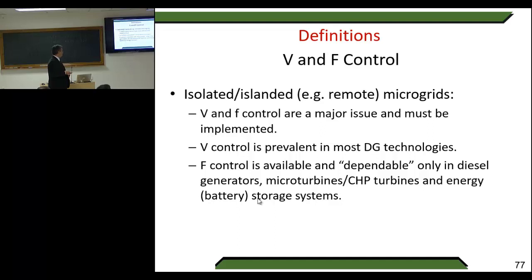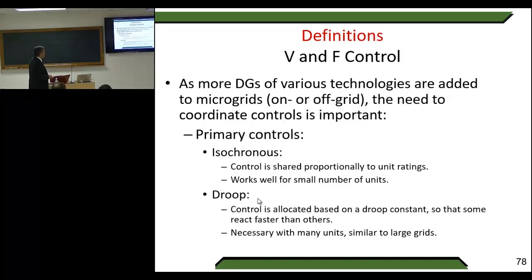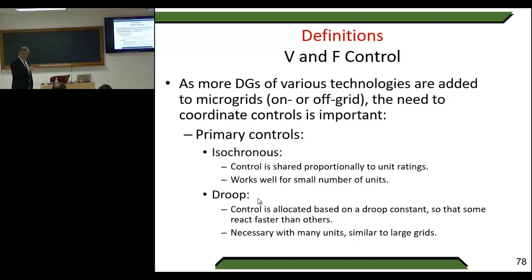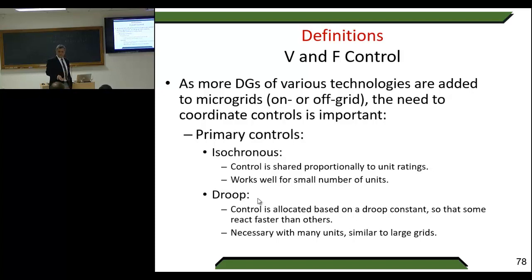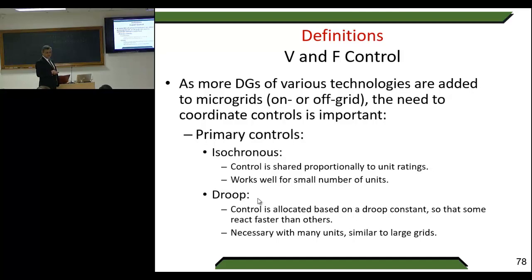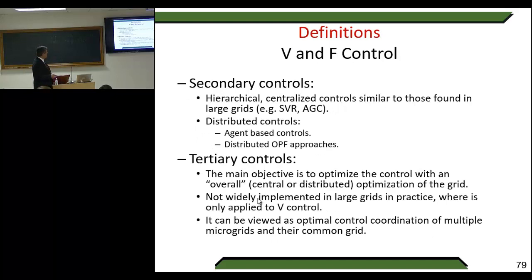Frequency control is not available for all DG technologies. As more DGs of various technologies are added to microgrids, the need to coordinate control is important. In primary control, you have isochronous mode or droop mode. Isochronous mode shares control proportionally to unit ratings; it works well for a small number of units but becomes complicated with more units as oscillations arise. Droop control allocates control based on droop constants so some react faster than others — similar to the strategy used in main systems.